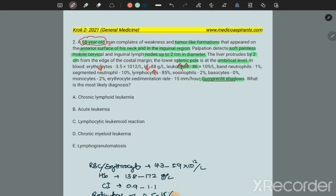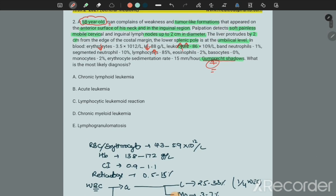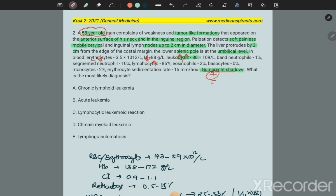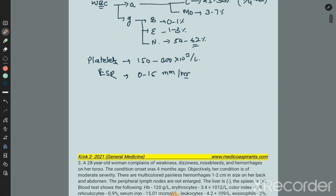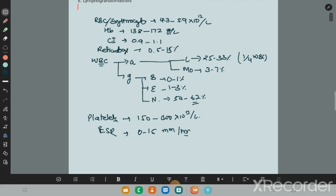ESR is normal and Gumprecht shadows are present. This is definitely a condition where RBC and hemoglobin are both decreased, indicating anemia. From a conceptual point of view, you can identify this.